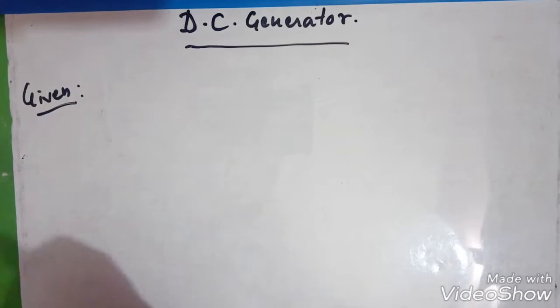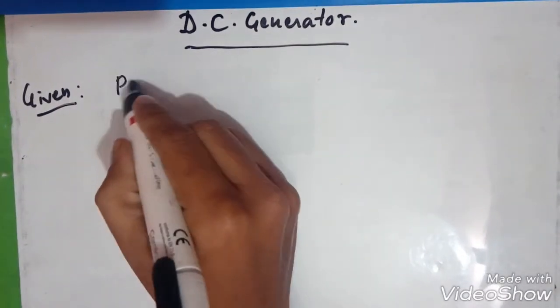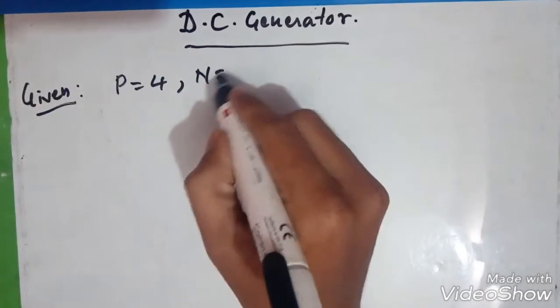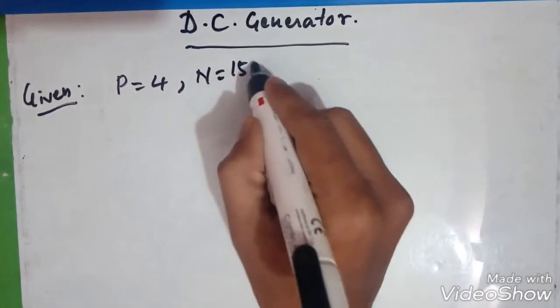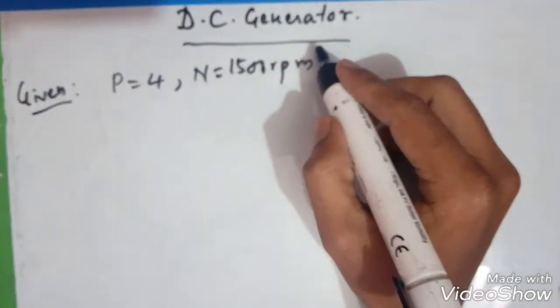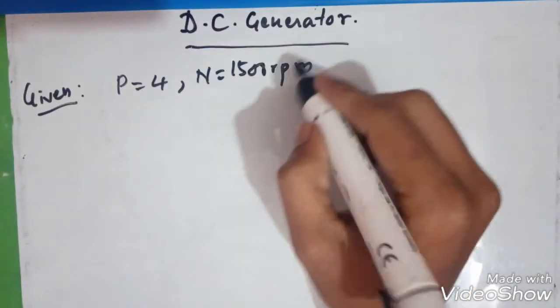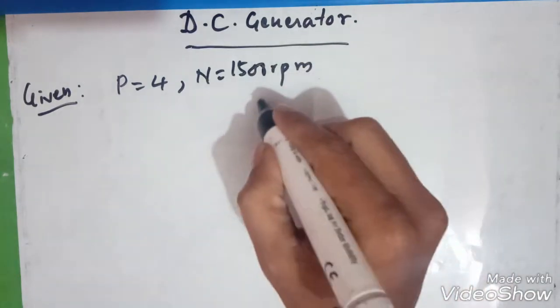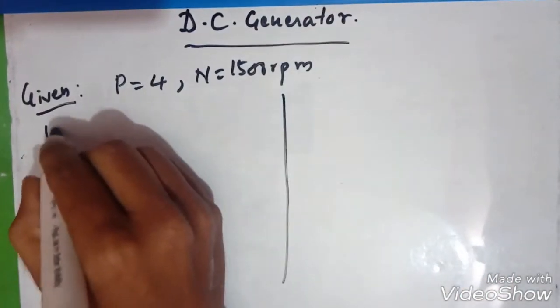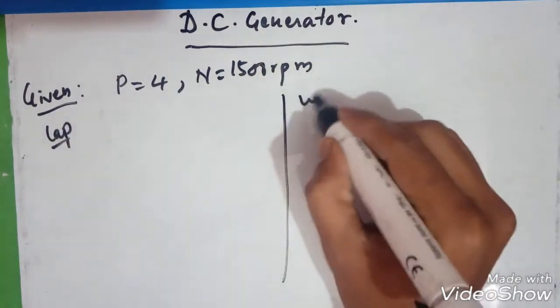A 4 pole, so that means P is 4. 1500 rpm, N is 1500 rpm. Lap wound is different, so let us separate it. We will have here lap, and here we will take wave wound.